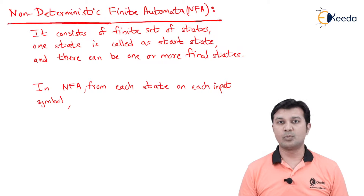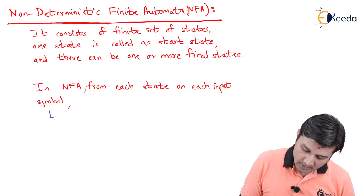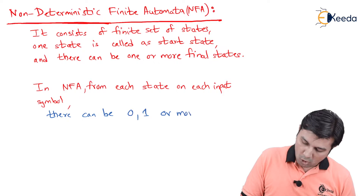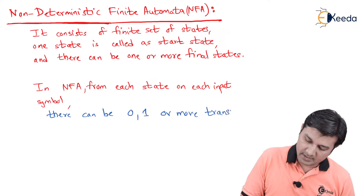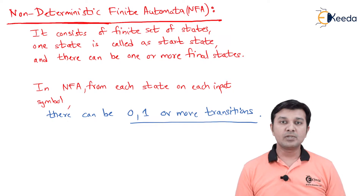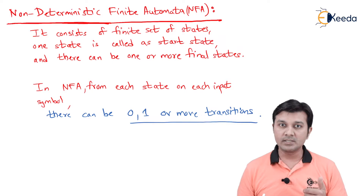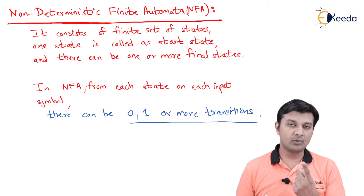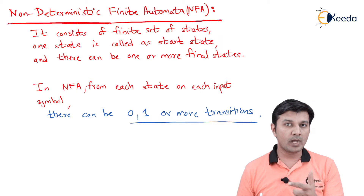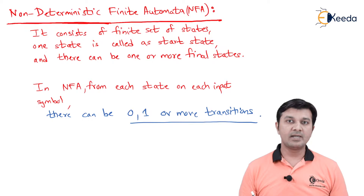What is different is the second point. In NFA, from each state on each input symbol, there can be zero, one, or more transitions. DFA used to say from each state on each input symbol there is exactly one transition. Here it says there can be no transitions, one transition, or more than one transition. So DFA permits only one; NFA permits zero, one, or more than one. That's how NFA is different from DFA.